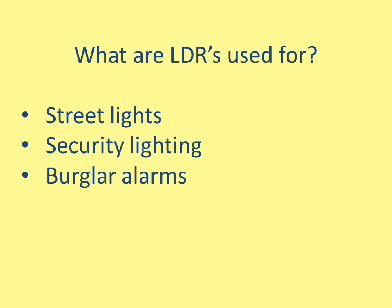The last thing you need to know is what LDRs are for: street lighting, security lights, or burglar alarms — anything electrical that needs to know how bright it is outside. For example, street lights seem to know when to come on when it gets dark. The reason is they have an LDR on top, and when it gets dark they detect less light intensity and therefore turn on the street lights.